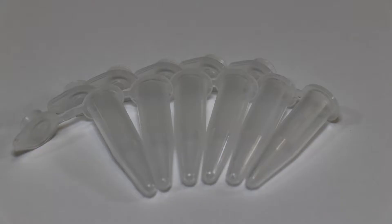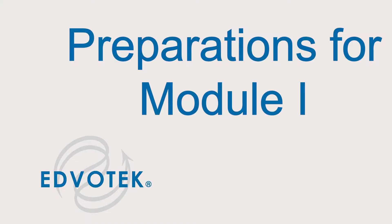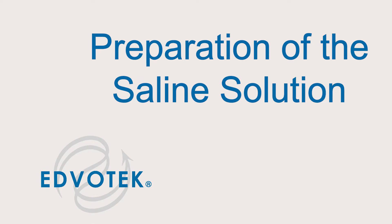You'll also need 0.5 milliliter snap top tubes and 0.2 milliliter PCR tubes. Preparations for Module 1: preparation of the saline solution. Step 1: dissolve all 8 salt packets, approximately 4 grams, in 500 milliliters of bottled water.